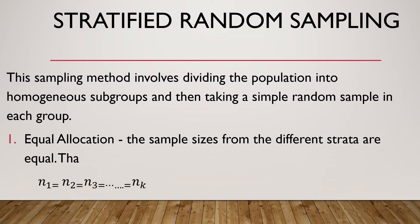Next is stratified random sampling, which can be classified into two: equal and proportional. This sampling method involves dividing the population into homogenous subgroups — meaning they share the same characteristics — and then taking a simple random sample from each group.